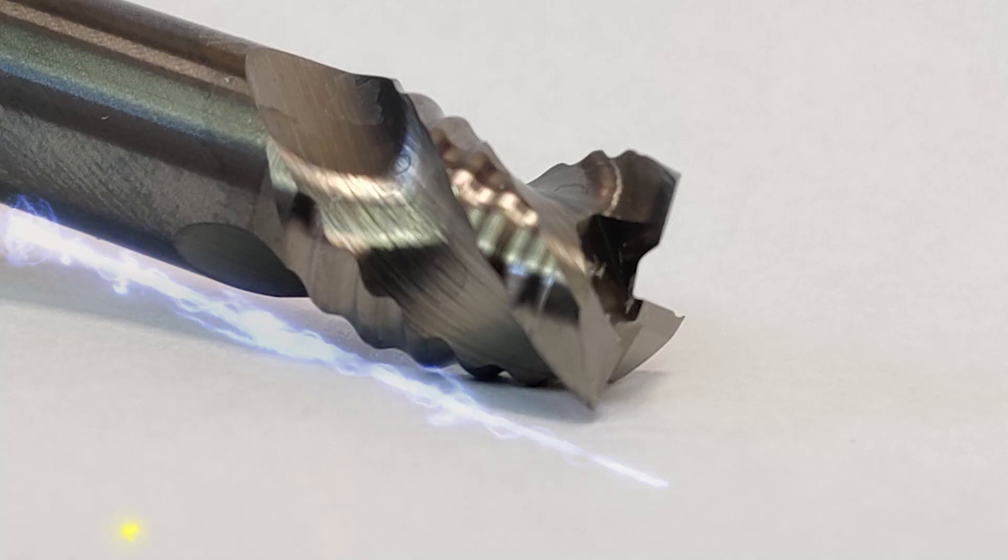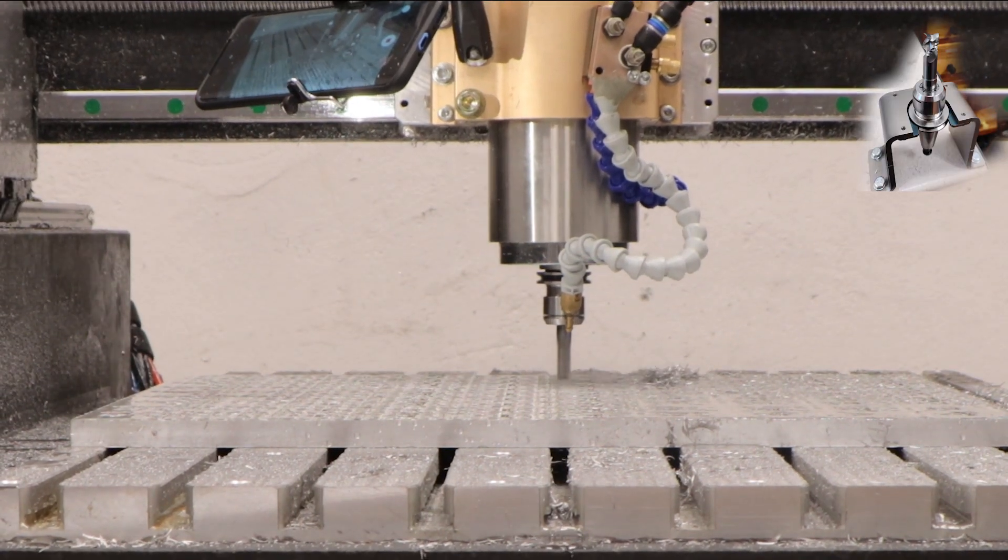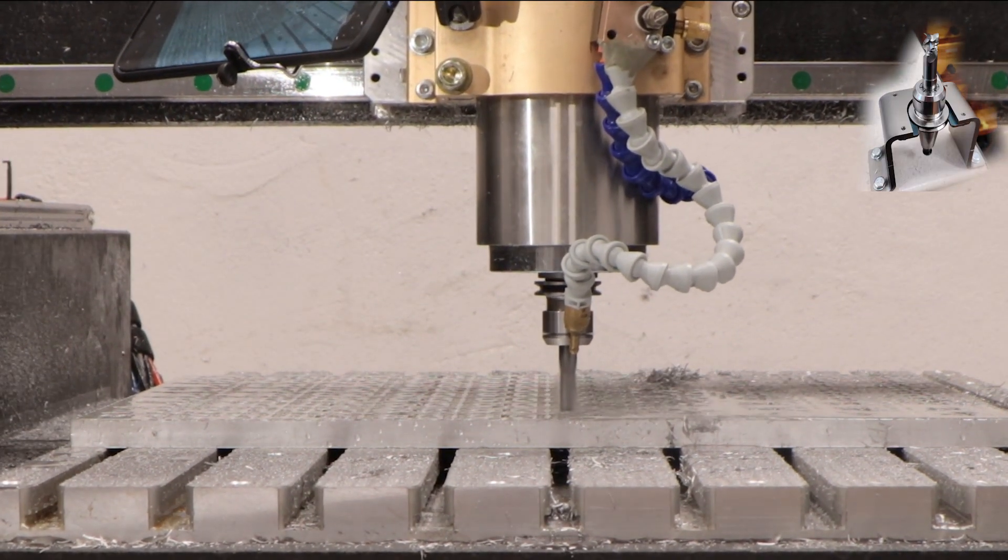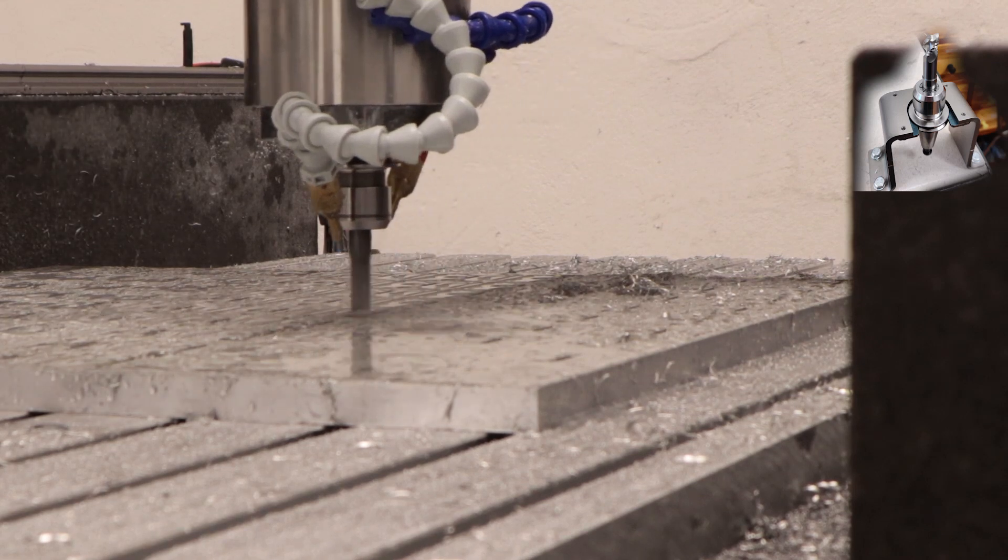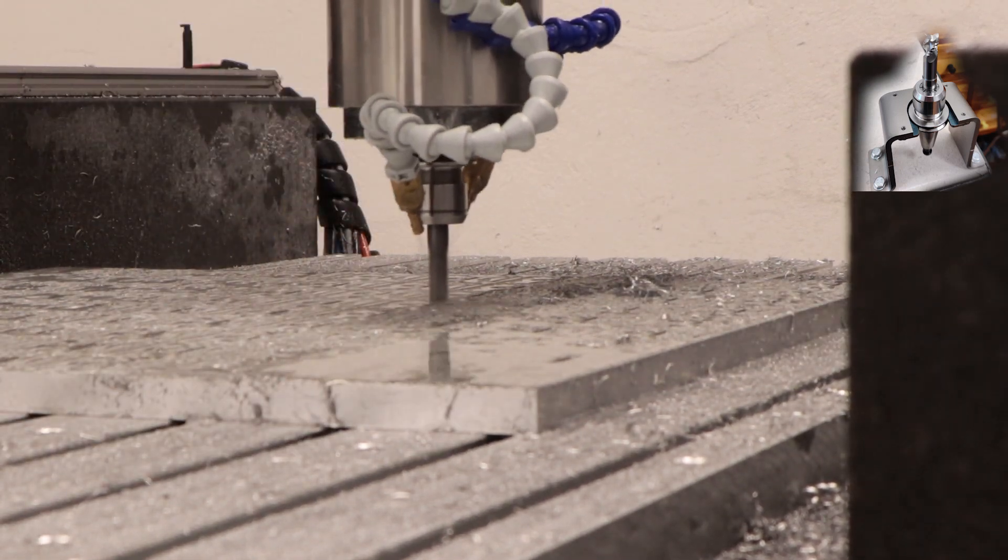The first step was to cut special holding elements. You can see here fixture for the part. This is just the final cut on the fixture done with 12mm end mill.